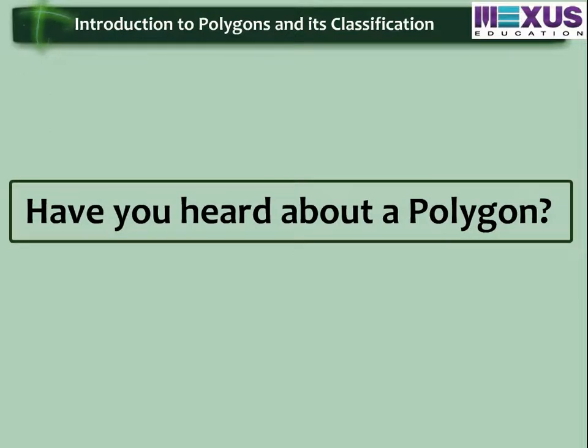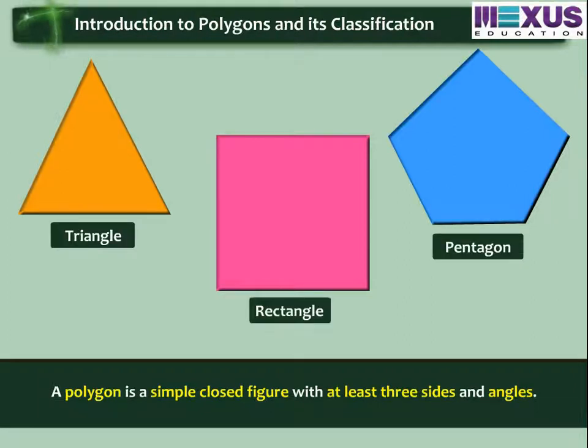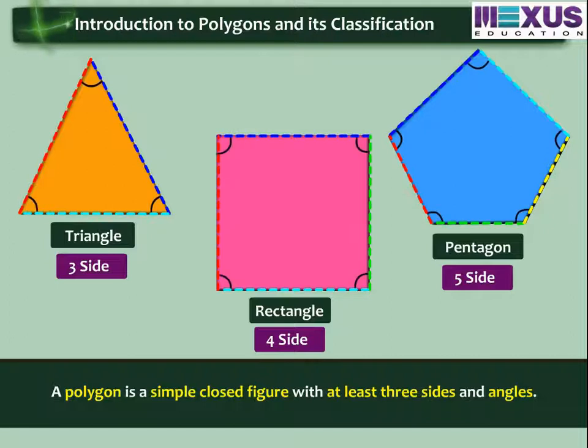Have you heard about a polygon? A polygon is a simple closed figure with at least three sides and angles. They are named and classified according to the number of sides and angles.